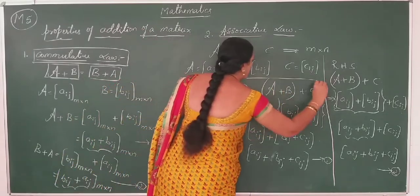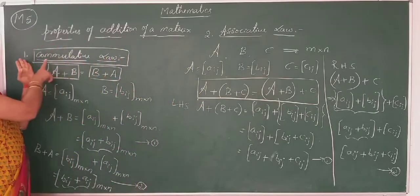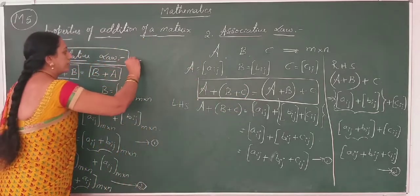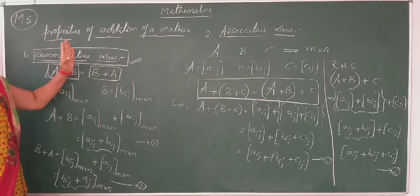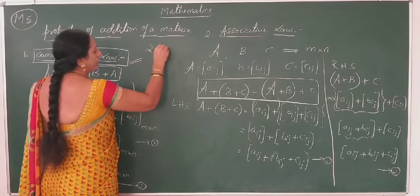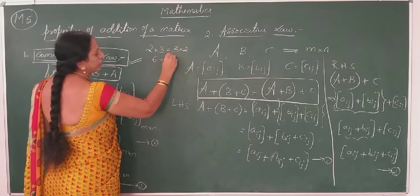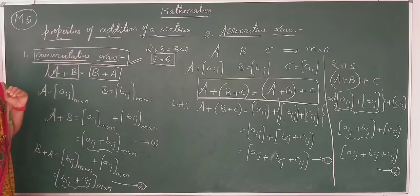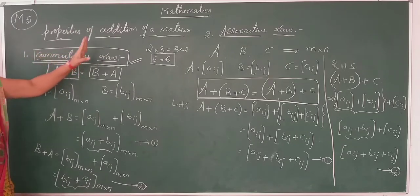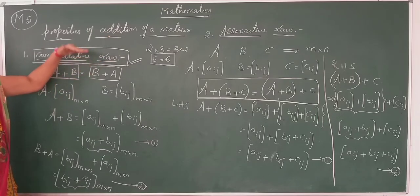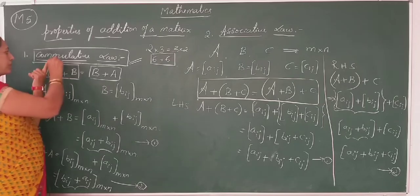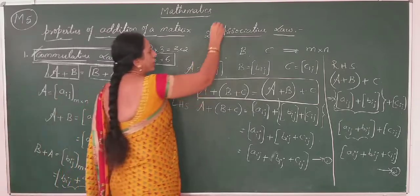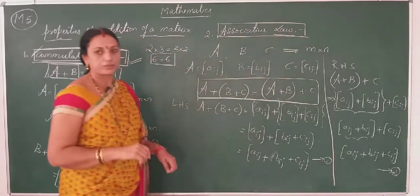Addition of matrices is both commutative and associative. Note that multiplication of matrices is not commutative — A×B is not equal to B×A. While for numerical numbers 2×3 = 3×2, this concept does not extend to matrices. For matrices, commutativity applies only to addition, not multiplication.